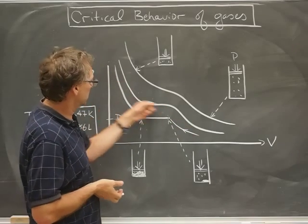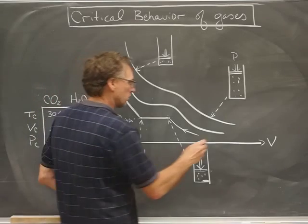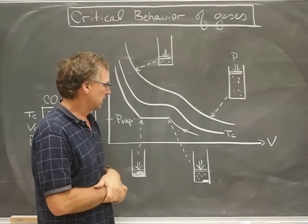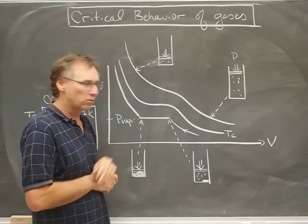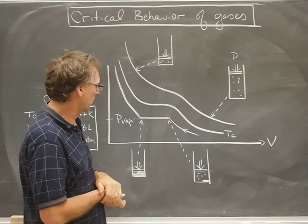So that leaves this middle isotherm. This is called the critical isotherm, T-critical, and it's characterized by an inflection point right here. This is where the slope is zero but also the second derivative is zero.